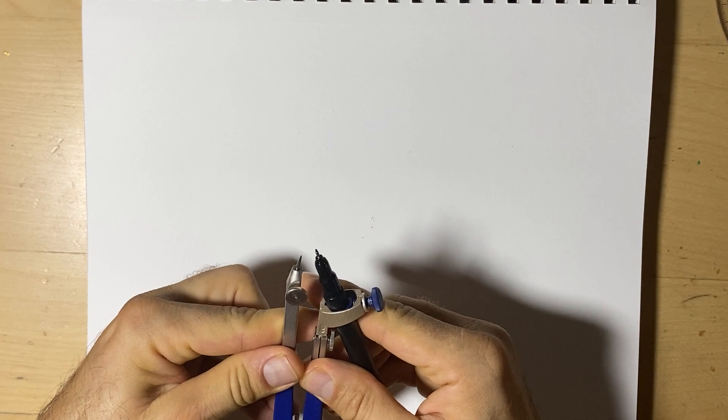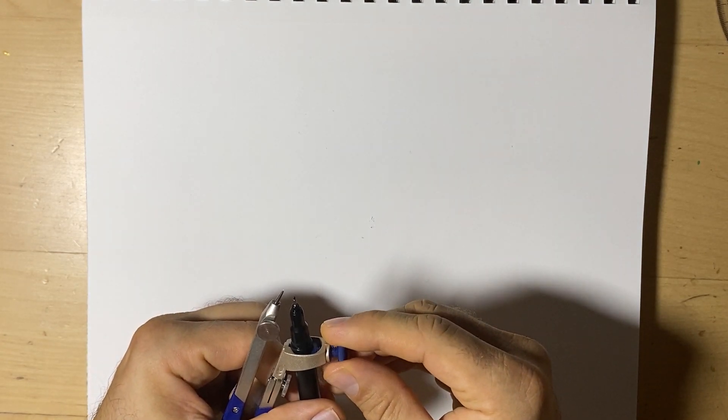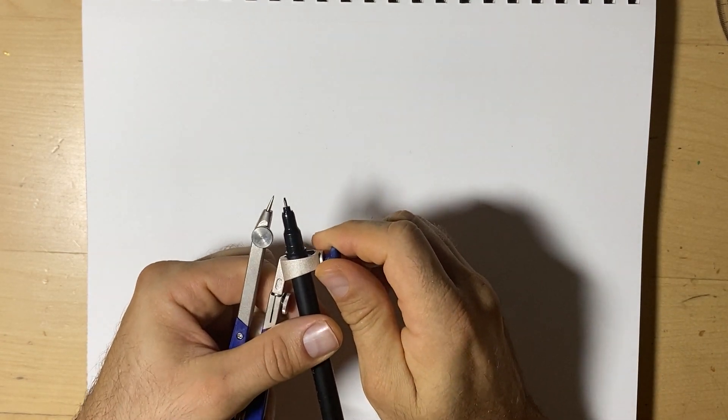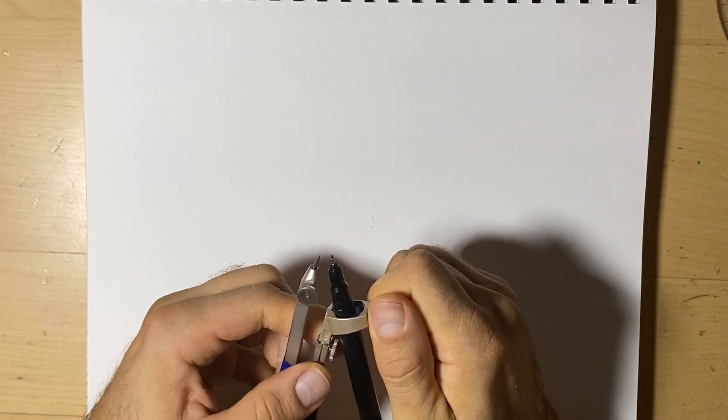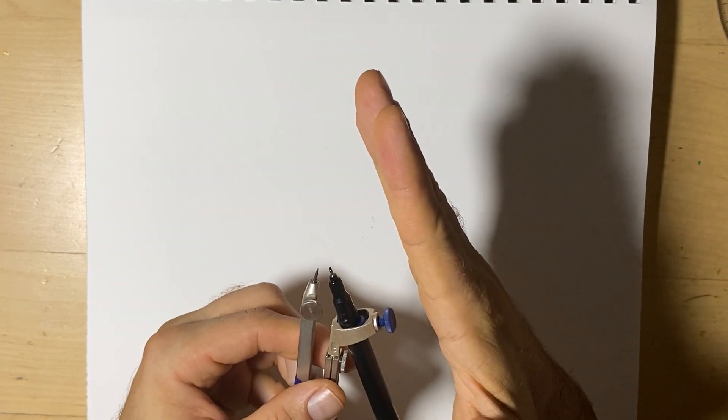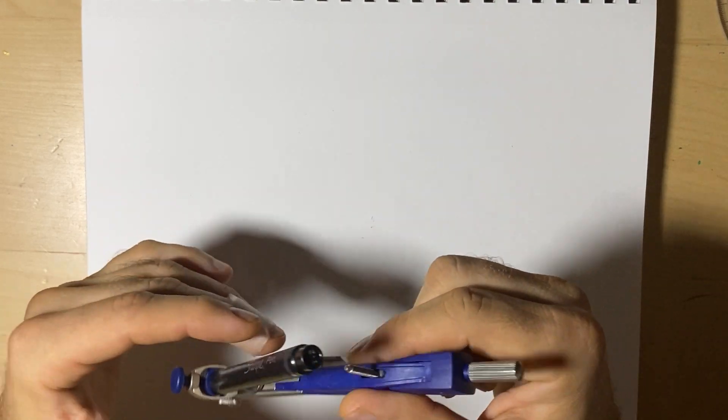Another thing we typically want to remember is that our compass point and our compass tip should be about the same length. Really, the closer the better. If the pen is too high, it's awkward. If it's too low, it gets more awkward.